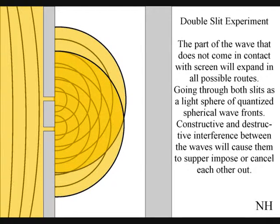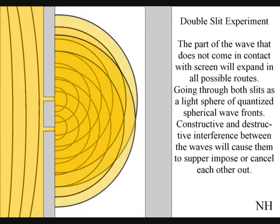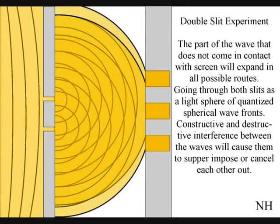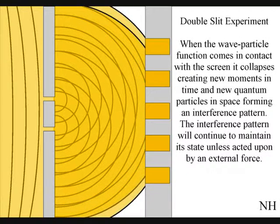Constructive and destructive interference between the waves will cause them to superimpose or cancel each other out. When this wave-particle function comes in contact with the screen, it will collapse, creating moments in time and quantum particles in the shape of an interference pattern.